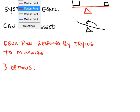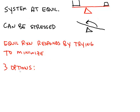And in terms of a chemical reaction, there are three options for the system to try to respond to that stress. All three options are always trying to minimize that stress. And this is called Le Chatelier's principle.